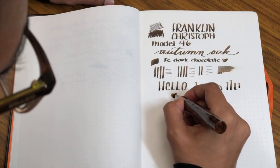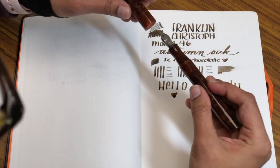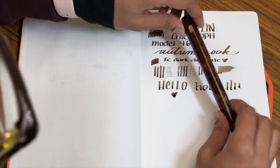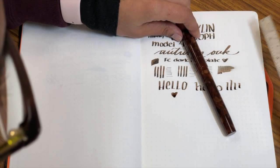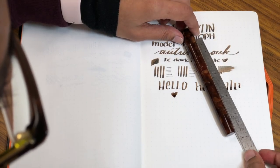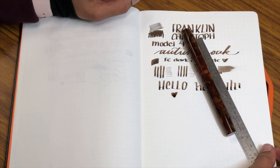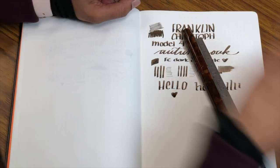Thank you to Franklin Christoff for sending this over for me to check out and share with you. I hope you like the autumn oak as much as I do. I think it's very pretty. You can find me on Facebook, Twitter, Patreon, and Instagram as Gourmet Pens. If you enjoyed, please like and subscribe. And if not, we'll see you for the next video anyways. Okay, bye!